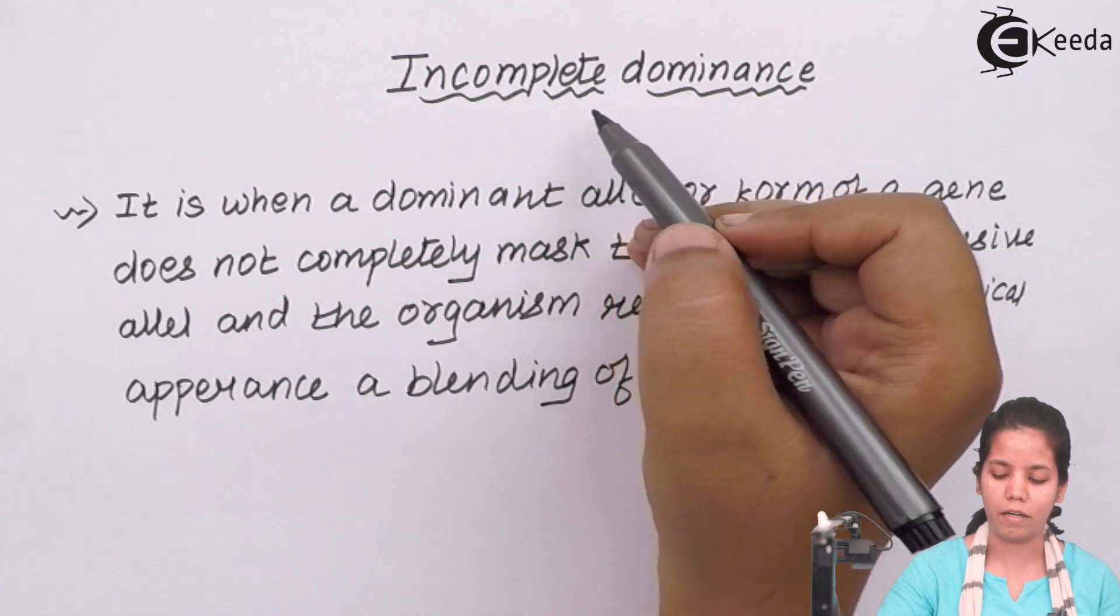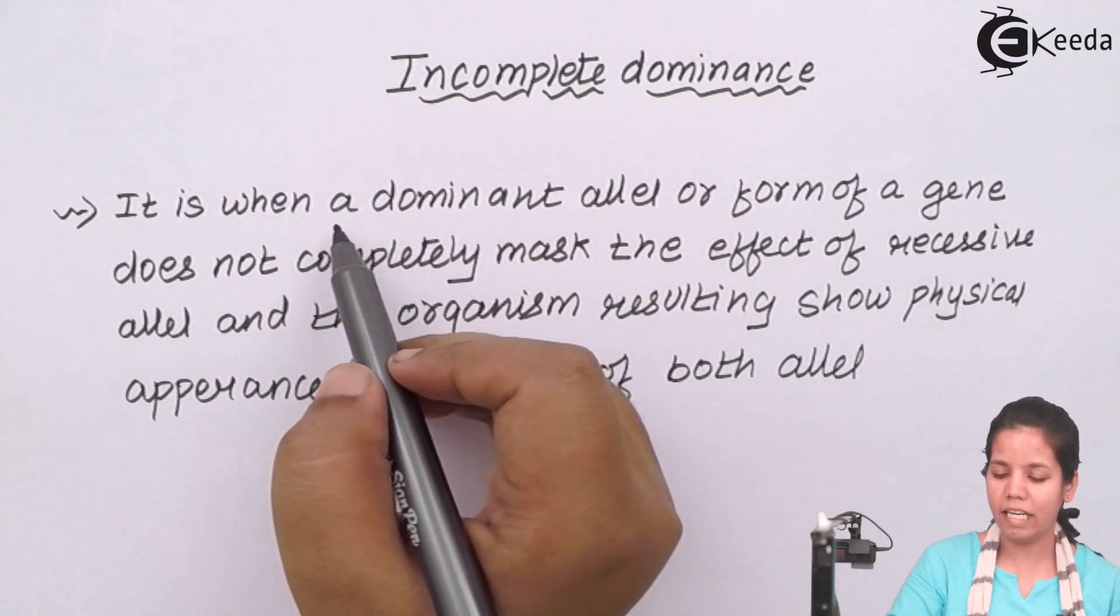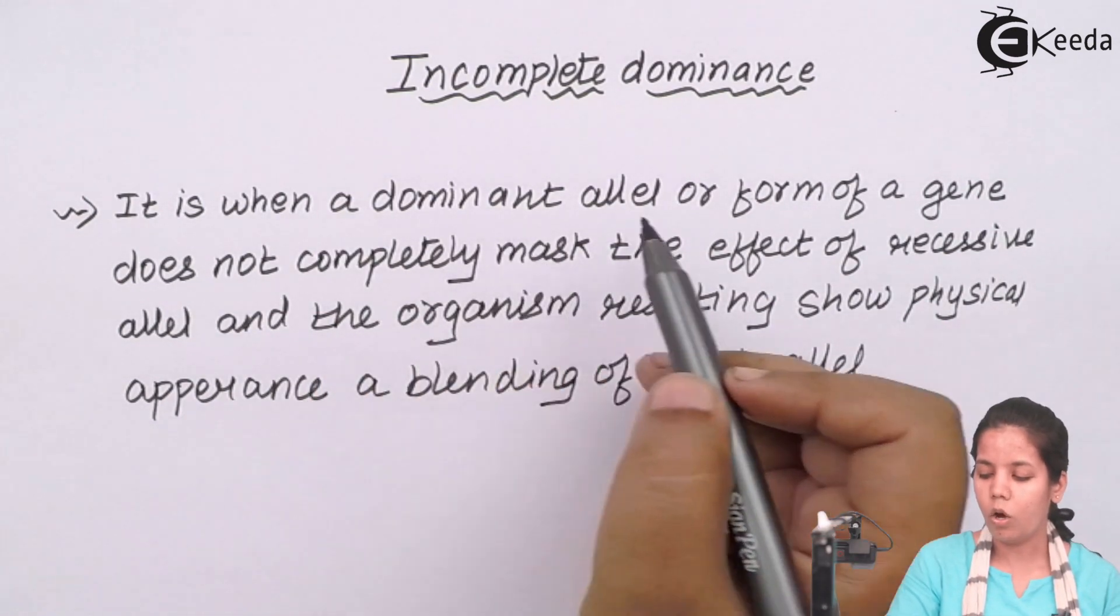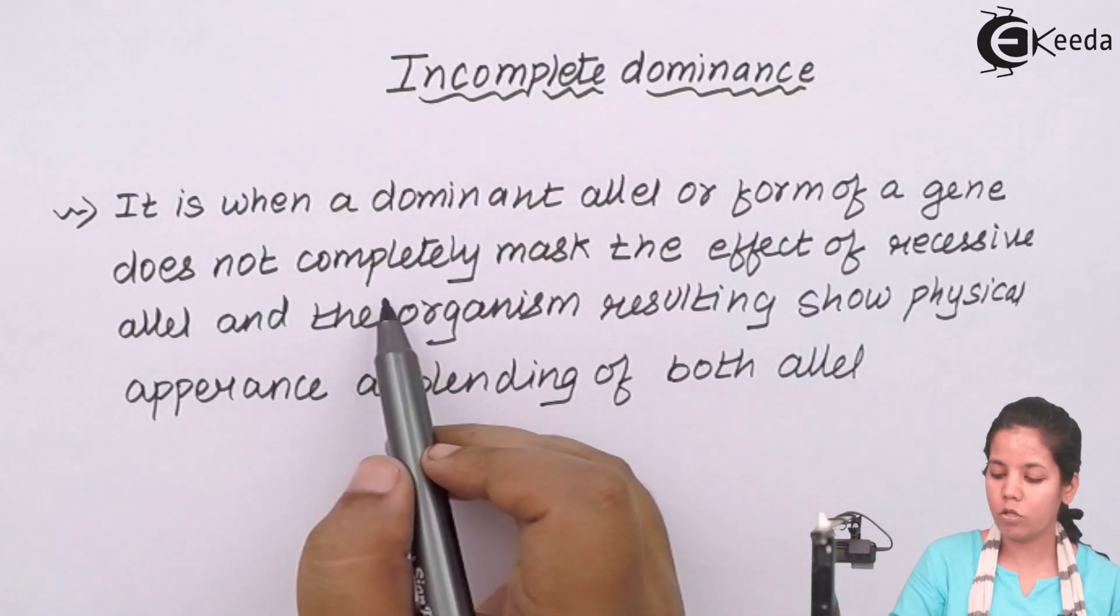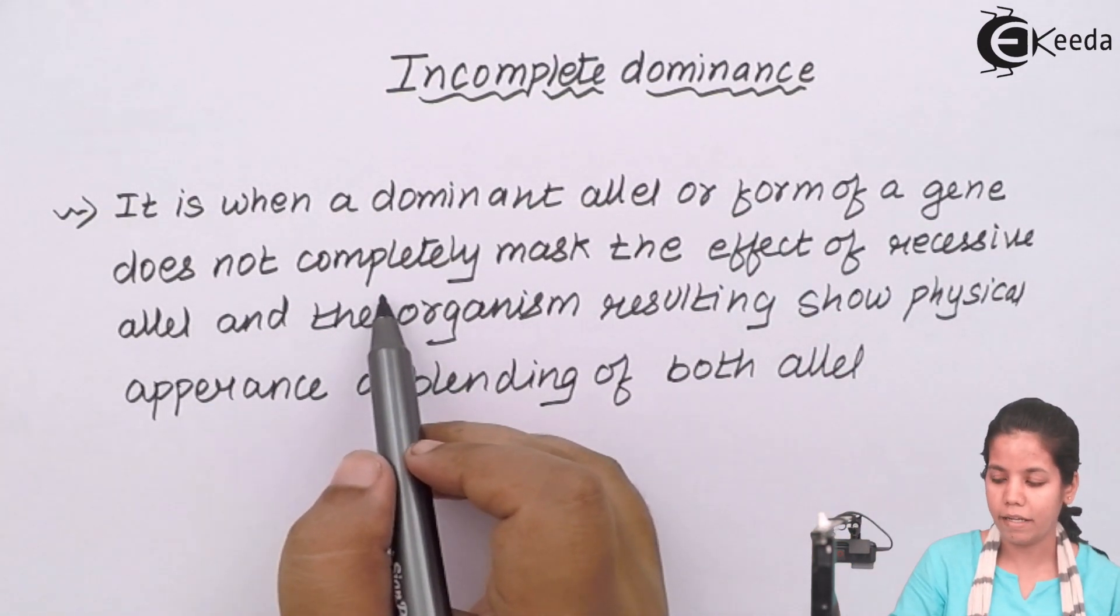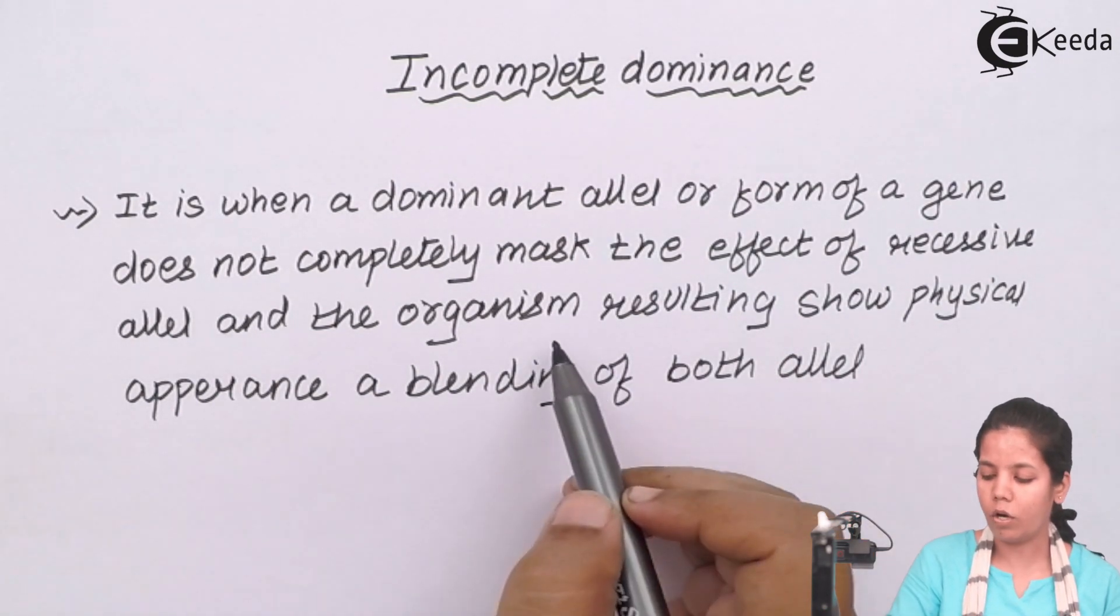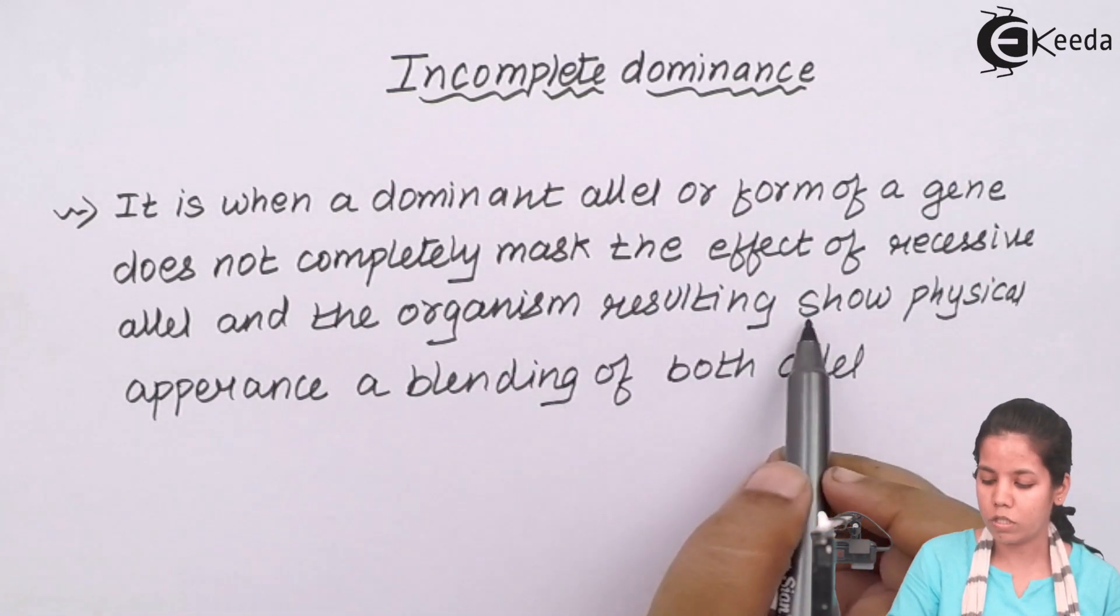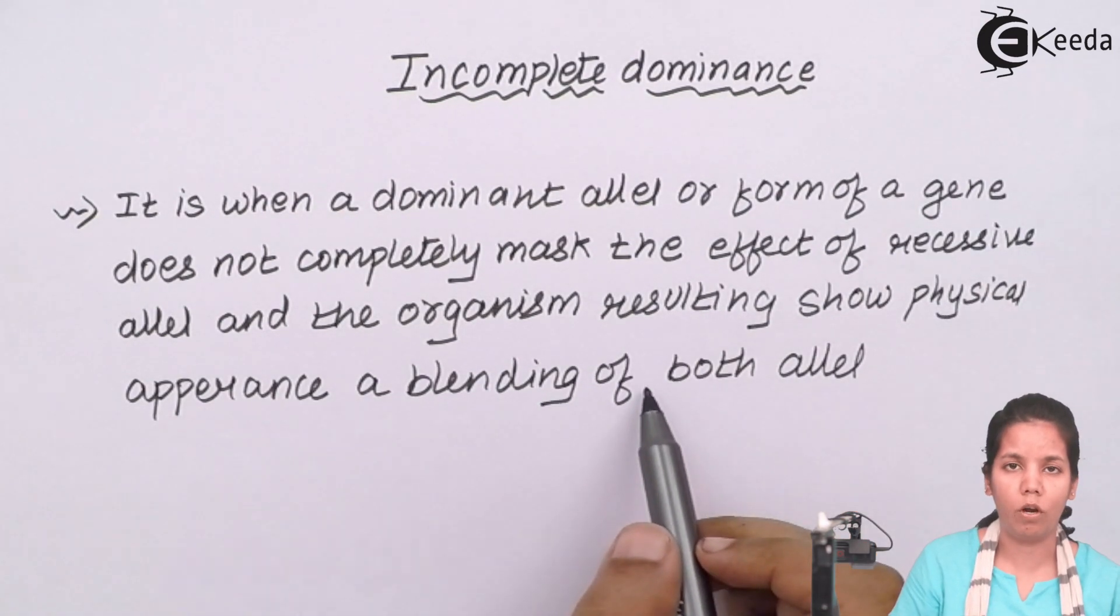The law of incomplete dominance clearly states that when a dominant allele or gene or a form of a gene does not completely mask or hide the effect of the recessive partner or recessive allele, and the organism resulting shows a physical appearance or blending of both the alleles—pink rose, as I've told you a lot.